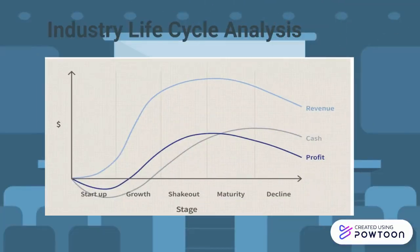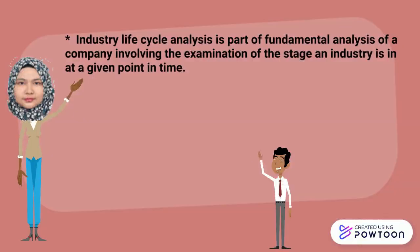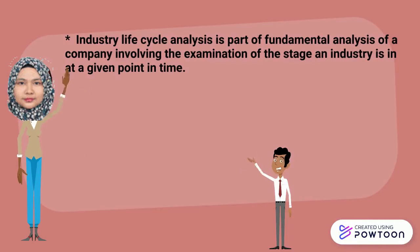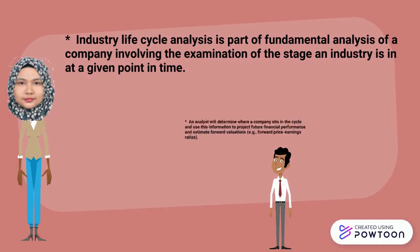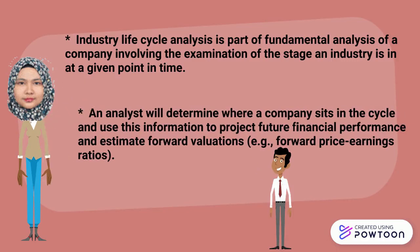This is the industry life cycle analysis. There are four stages in this life cycle: start-up, growth, maturity, and decline stage. Industry life cycle analysis is part of the fundamental analysis of a company, involving the estimation of the stage an industry is at a given point in time. An analyst will determine where a company sits in the cycle and use this information to project future financial performance and estimate forward value ratios.